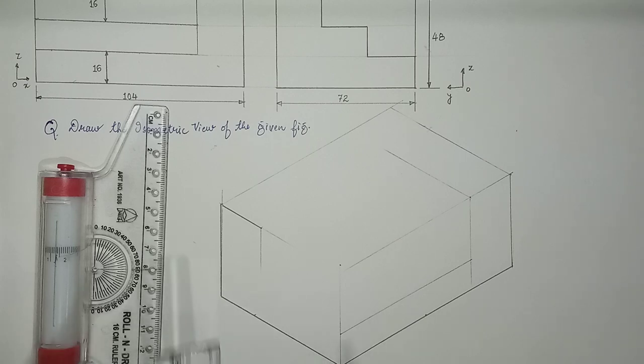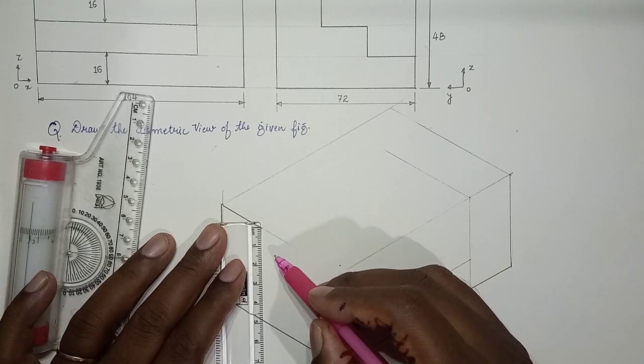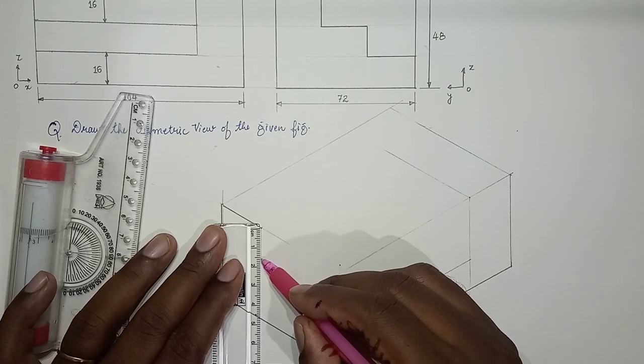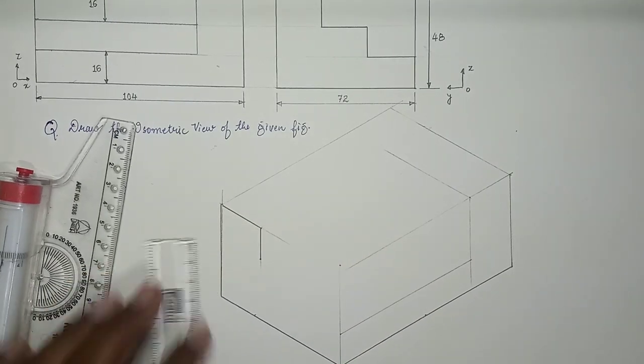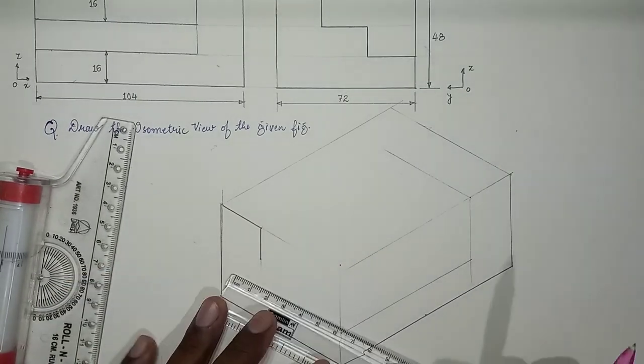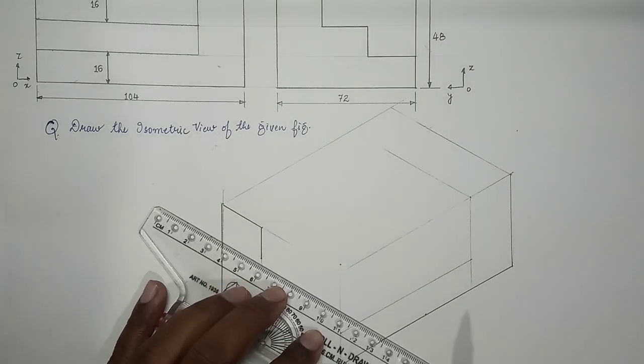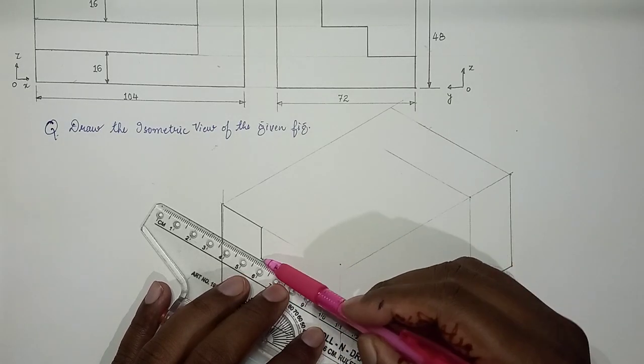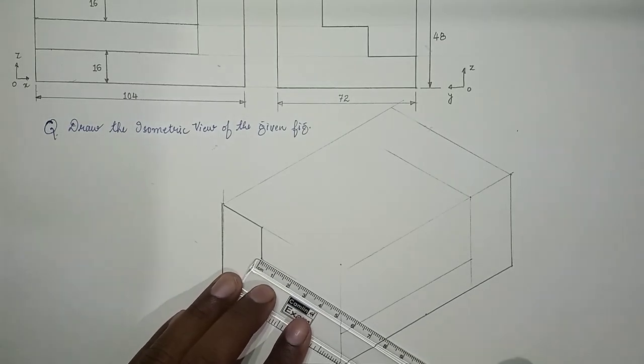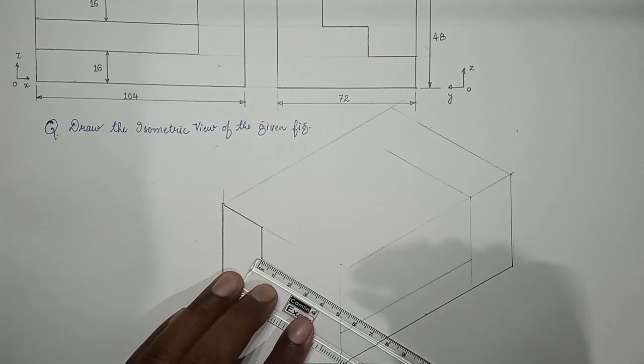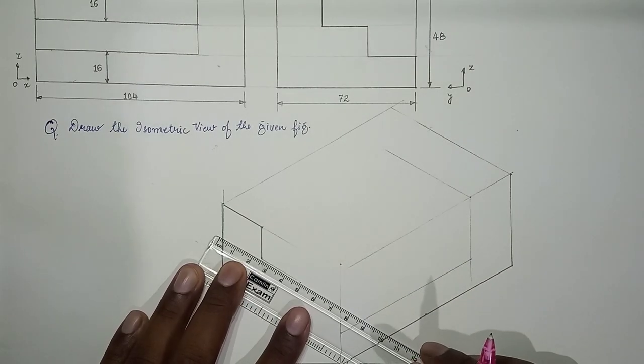We need to mark 16. And we draw a line. Again how much? Again 24. So again with the help of roller scale you can draw a line parallel to y-axis. Along y-axis you can draw a line. We again mark 24 mm and connect this with a darker shade.